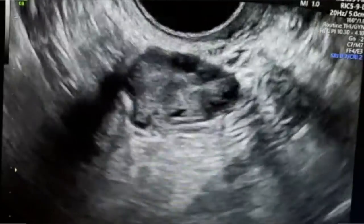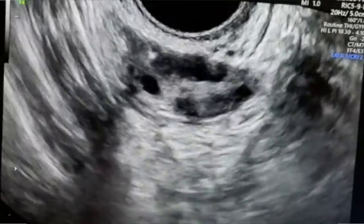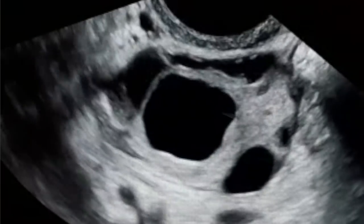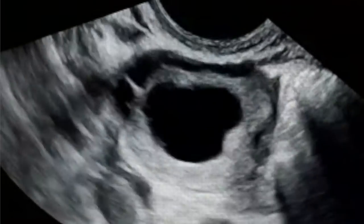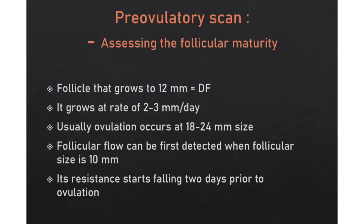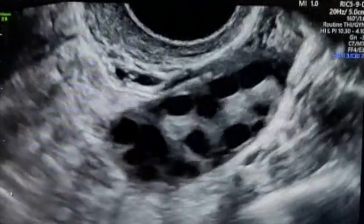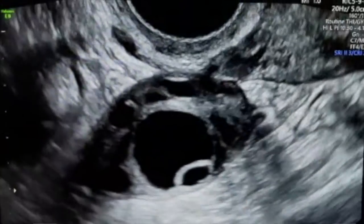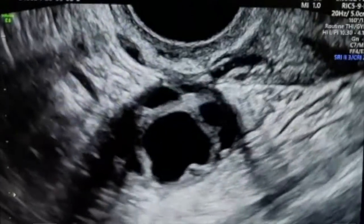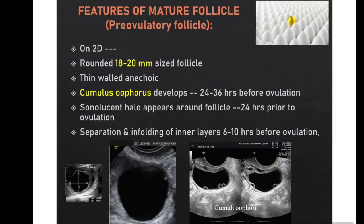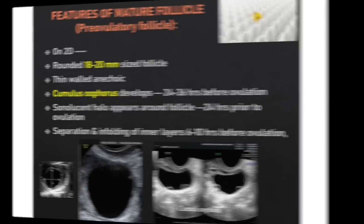The follicle that grows to 12 mm becomes the dominant follicle, growing at 2 to 3 mm per day. Ovulation usually occurs at 18 to 24 mm follicle size. Follicular flow can first be detected when the follicular size is 10 mm and its resistance starts falling 2 days prior to ovulation. On 2D ultrasound, the mature follicle is rounded, 18 to 20 mm in size, with thin walls, anechoic contents, and a cumulus oophorus—a small projection from the wall within the follicular lumen—developing 24 to 38 hours before ovulation. Important findings to include in reports are follicle size, presence of cumulus oophorus, and follicular Doppler indices.